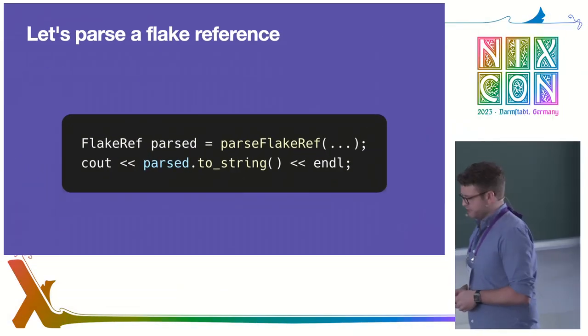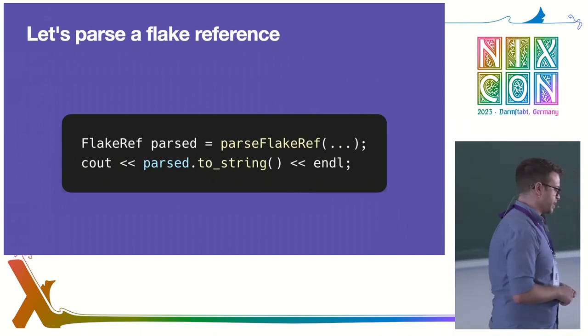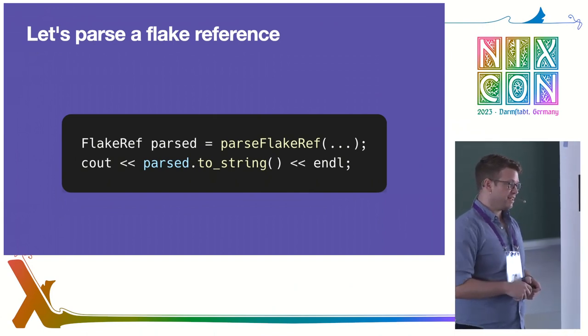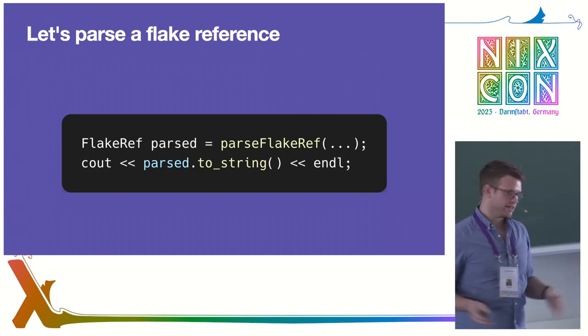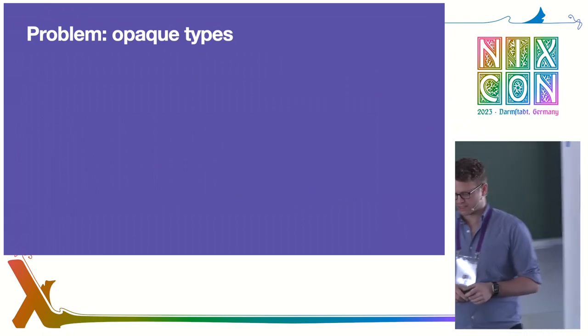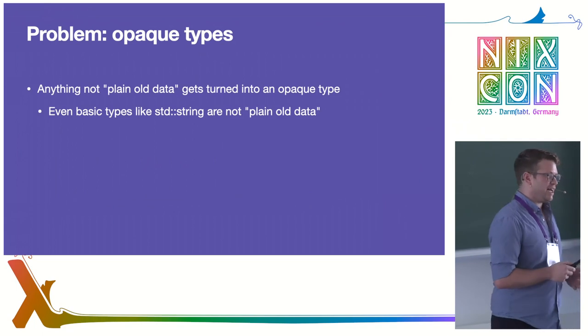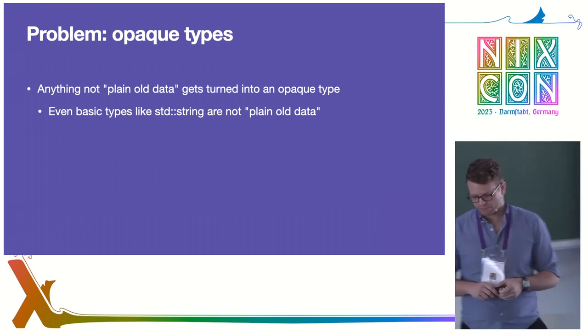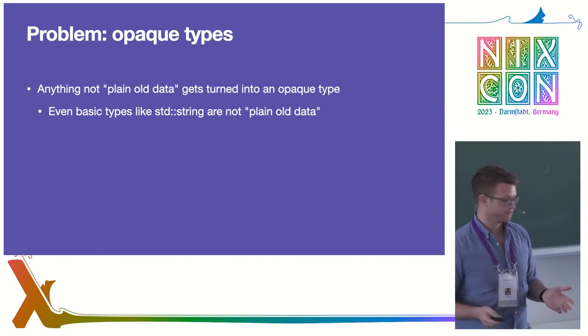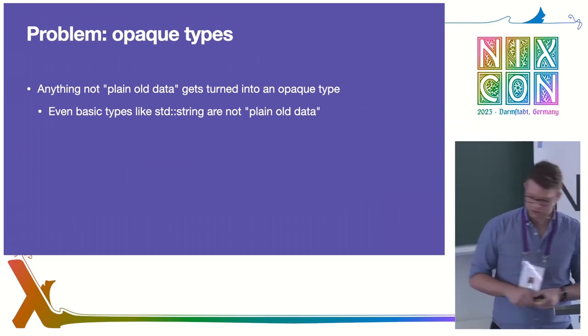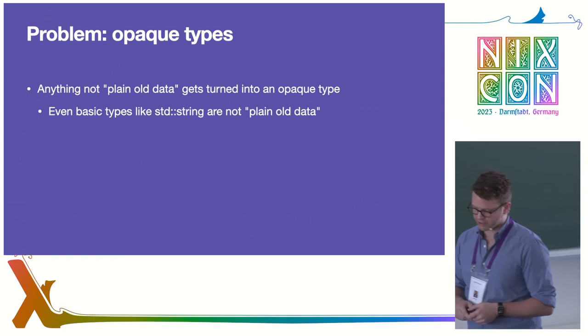I wrote C++ for the first time about a month ago, so all said and done, there's quite a lot of ceremony to get anything working at all. But it is possible. Let's try to parse a flake reference — I chose this example because it's very small and illustrates a lot of the issues. We're essentially round-tripping a string: parse it, then print it. Easy, right? Wrong. Problem one: opaque types. This is actually the main problem. Anything that's not plain old data gets turned into an opaque type — a bag of bytes at a memory address, that's about all you know. Even esoteric, rarely-used types like strings are considered not plain old data.